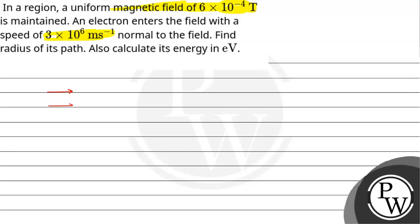Our magnetic field is in some direction, and the electron enters this way — perpendicular to it. So the angle is 90 degrees and the speed is 3×10⁶ meter per second. We are told to find the radius. This electron will move on a circular path because the magnetic force acts on it, and this magnetic force provides the centripetal force, causing the electron to rotate in a circular path.